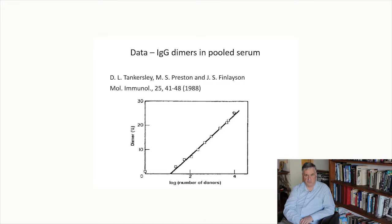Extensive studies on these IgG dimers have been done by Tankersley and his collaborators, with one paper published in Molecular Immunology, in which they found an intriguing semi-logarithmic relationship between the fraction of dimers in the pooled plasma and the number of donors of the pooled plasma. So let's see what this means for the IgG repertoire.